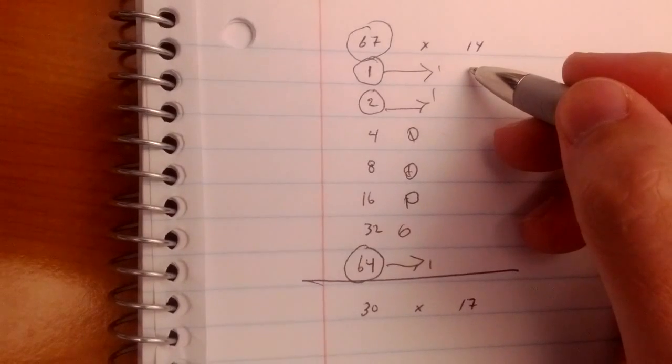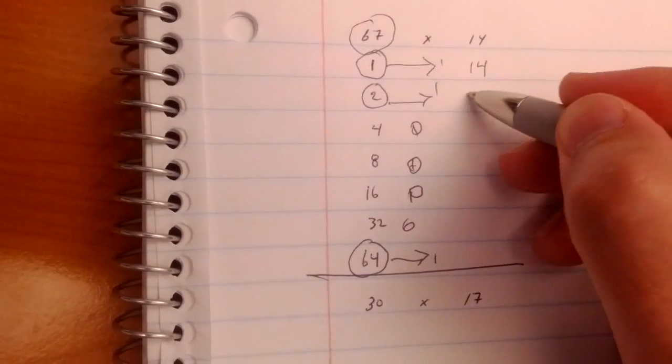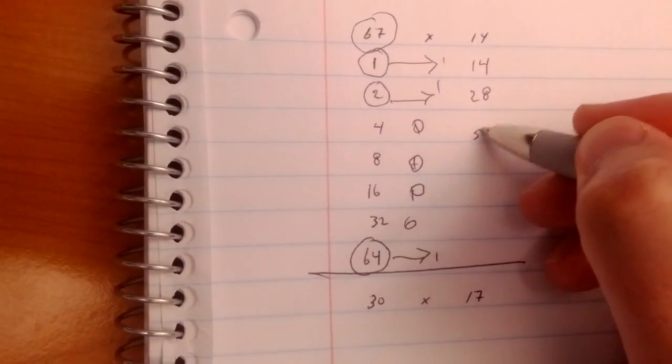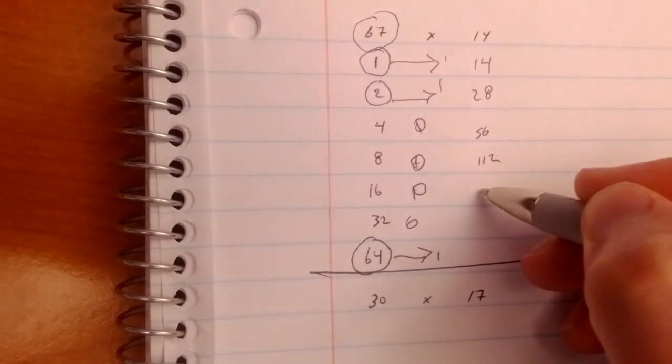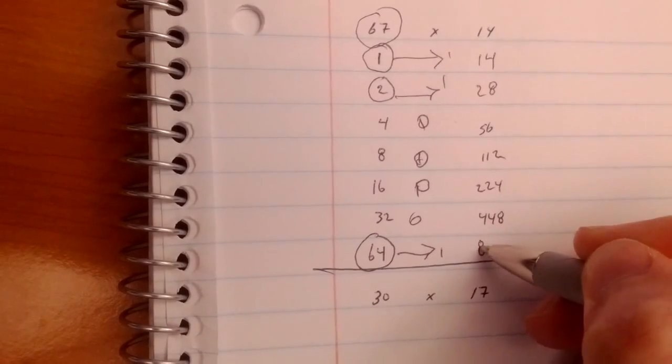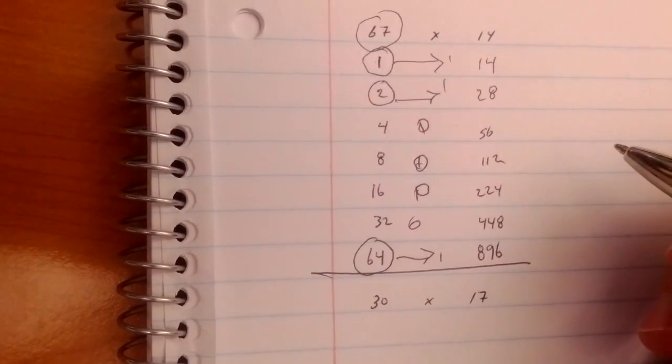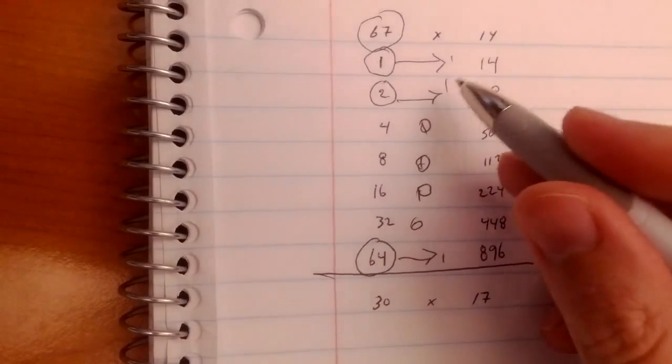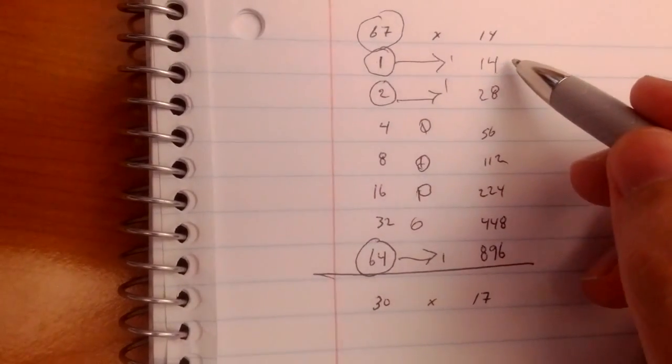Well, then you just need to double this column. You start with your 14, 28, 56, 112, 224, 448, 896. And since these are the ones we're using, all you do is sum these values.